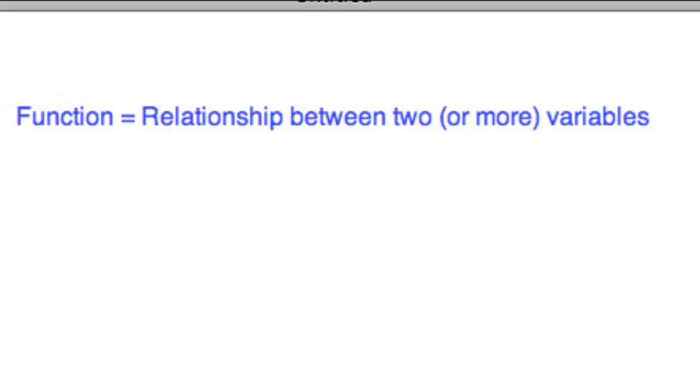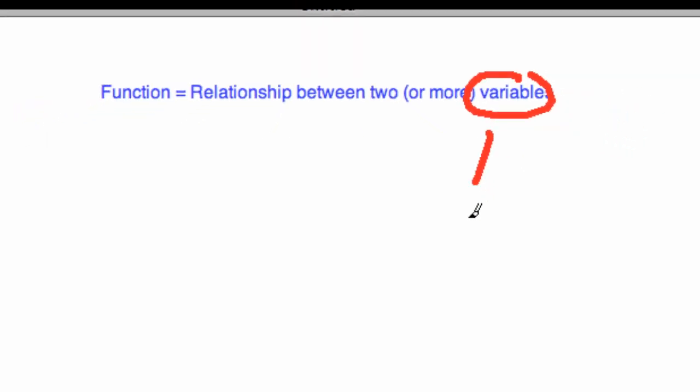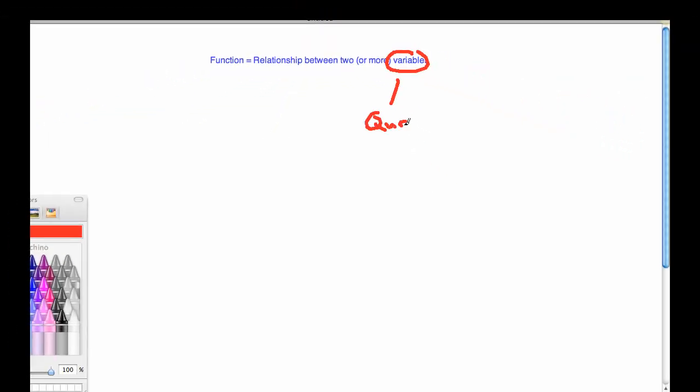What's a variable? That's a good question. A variable is just a quantity, something you can measure with a number that can change. So anything that you can measure with a number that can change is a variable.